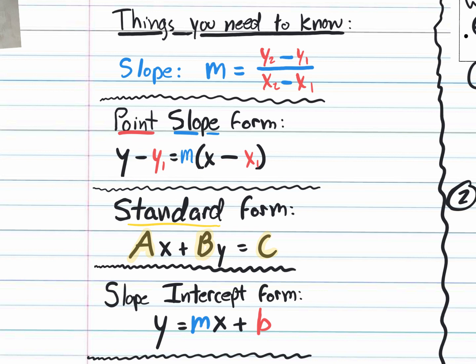These are the three different forms: point-slope form, standard form, and slope-intercept form — not necessarily in the order we learned them. We also know the slope formula: Y2 minus Y1 over X2 minus X1. Once you know all of this, it'll be really easy to apply when they ask you to write equations.